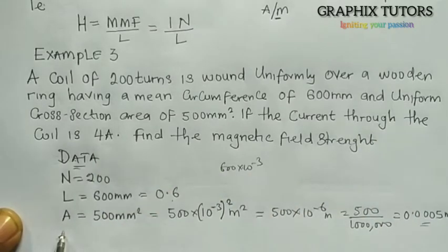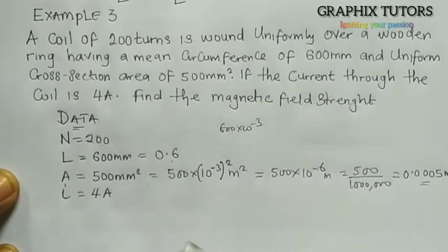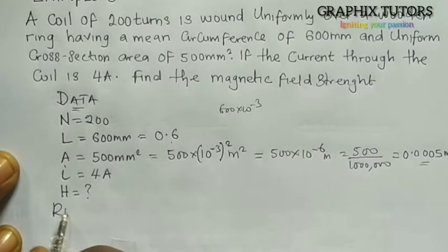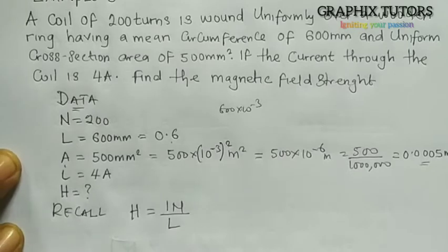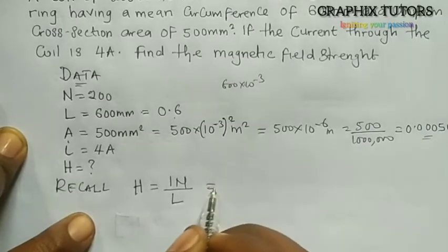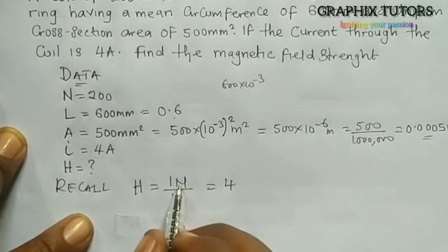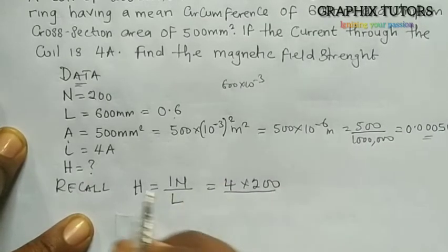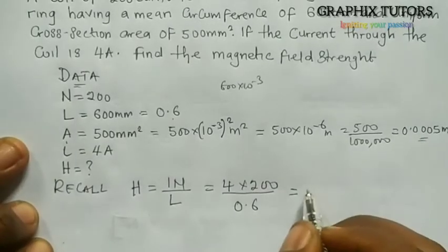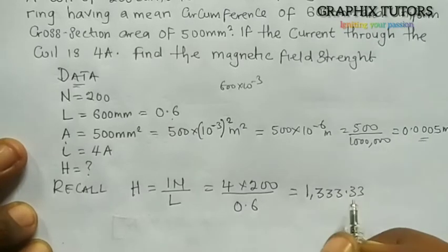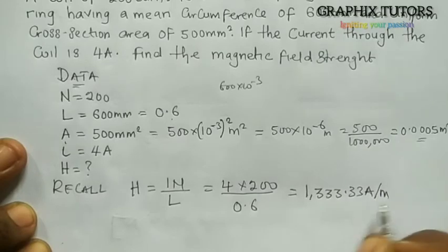We are looking for H. Recall: H = (I × N) / l. Substituting: I = 4, N = 200, l = 0.6. This gives H = (4 × 200) / 0.6 = 1333.33 ampere per meter. That is our magnetic field strength.